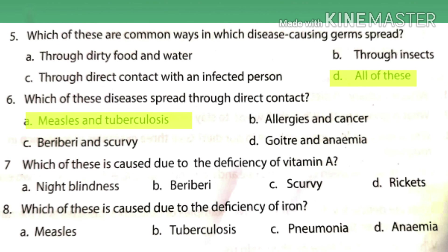Sixth MCQ: which of these diseases spread through direct contact? The answer is measles and tuberculosis. All other options — allergies, cancer, beriberi, scurvy, goiter, anemia — are non-communicable diseases that do not spread from one person to another.